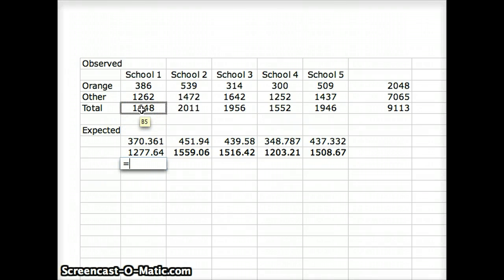We do the same thing with our third row. Actually, there is no third row. We only have two numbers, orange and other. The third row, of course, is our total.